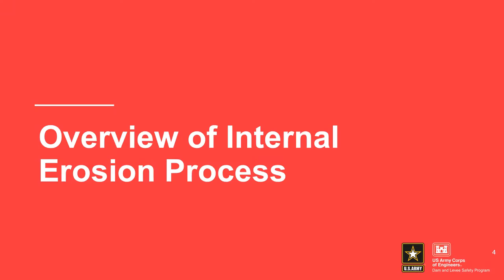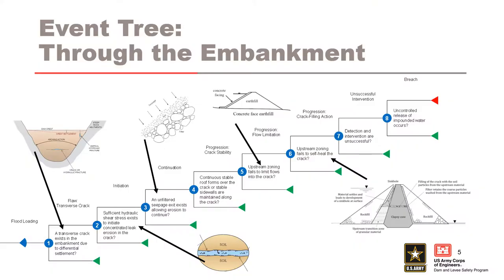Starting with an overview of the internal erosion process. In this typical concentrated leak erosion event tree, node 1 assesses the likelihood of a transverse crack existing in the embankment, and given the crack exists, node 2 assesses the likelihood of initiation. These two nodes are the primary focus of this presentation, while the other nodes are discussed in separate presentations. Node 3 assesses the likelihood of an unfiltered exit; nodes 4 and 6 assess the mechanical conditions for progression; node 5 assesses the hydraulic condition for progression; and nodes 7 and 8 are unsuccessful intervention and breach respectively. It's good practice to use the generic sequence of events or event tree as a starting point for failure mode evaluation, but then to adapt it for site-specific conditions, because not all nodes may apply to a specific dam.